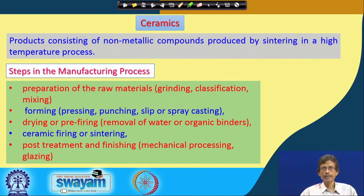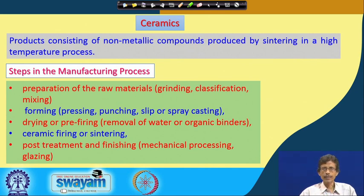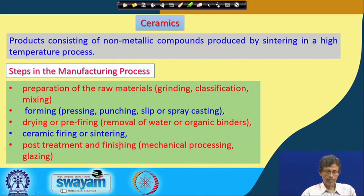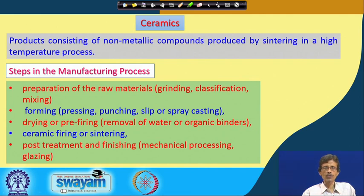Some organic binders if already added can be burned off as organic additives. The fourth step is the actual firing process — the ceramic firing process and sintering. During sintering, gas molecules come out through the bulk material giving a fluffy material, and when all gas molecules have escaped completely the material settles down into the sintered phase, sometimes forming a glassy type of material. In the last step you have post-treatment: the finishing process, which is basically mechanical processing and finally glazing to improve the surfaces of the ceramic material.